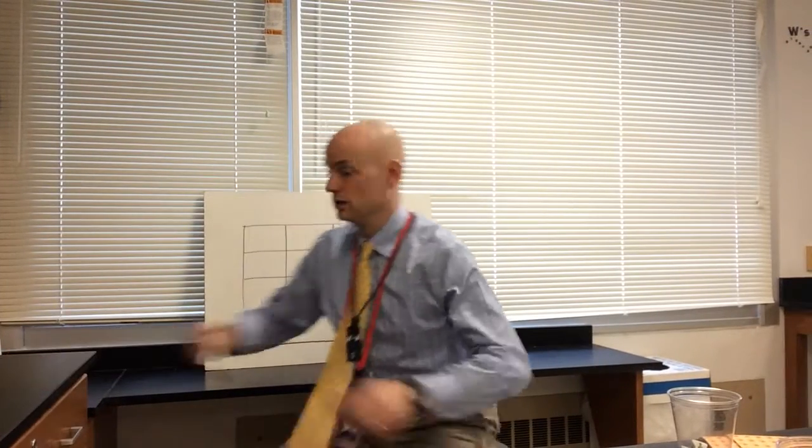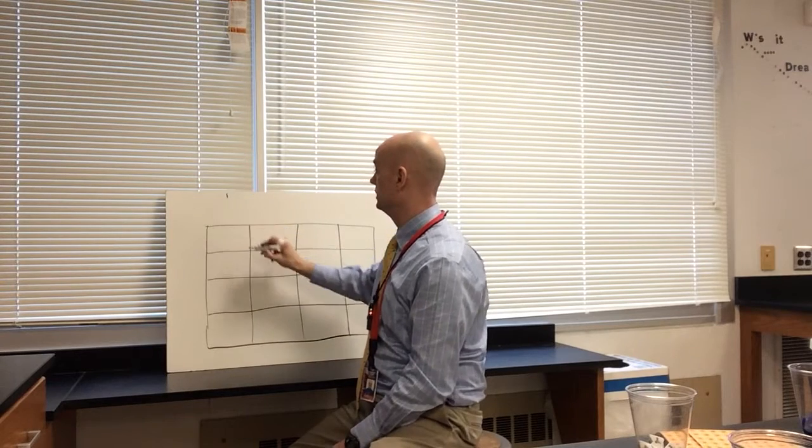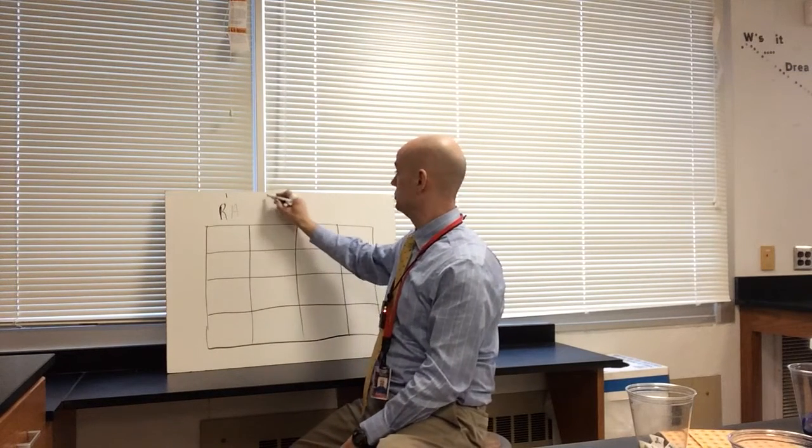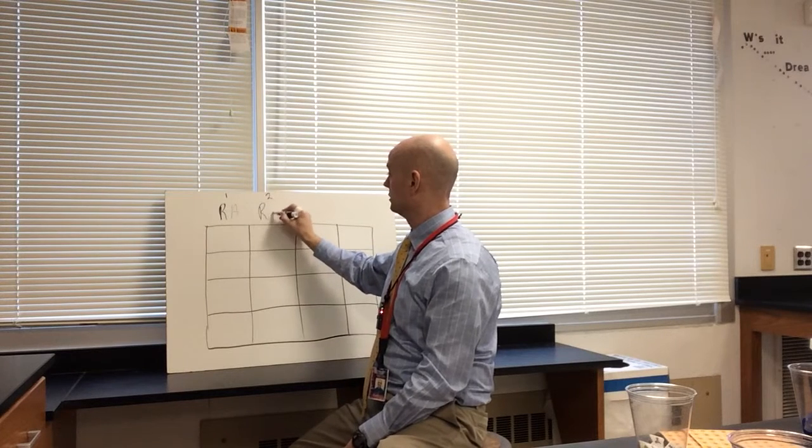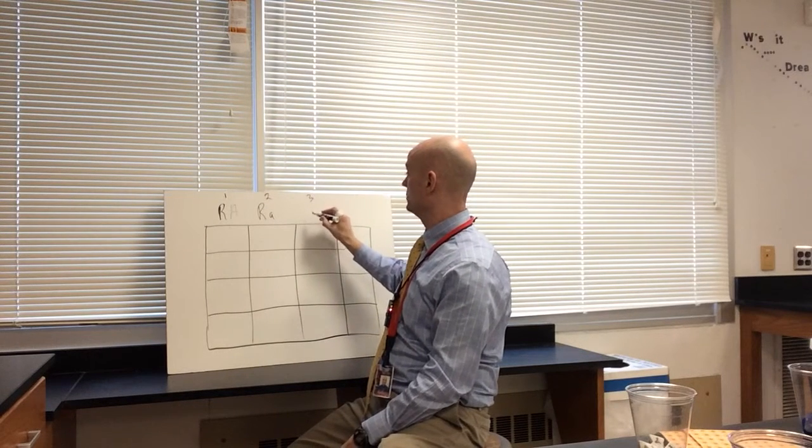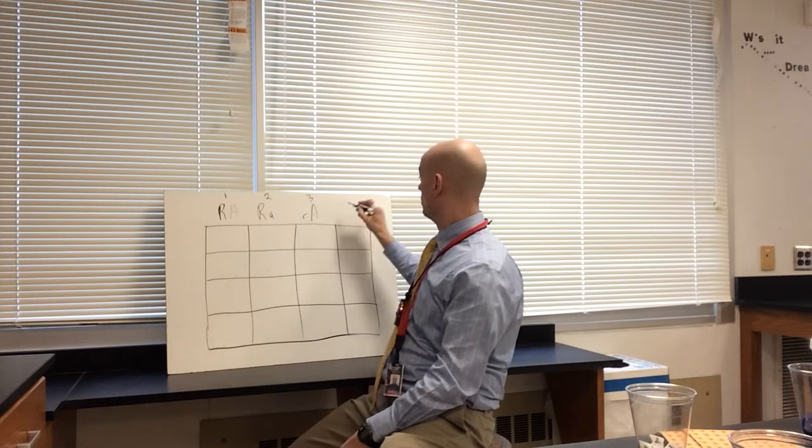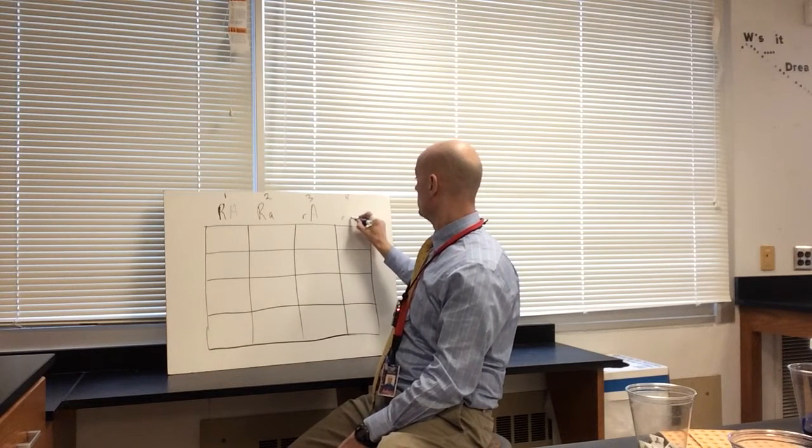So if we were to do a Punnett square, it'd look like this. So here is our square. If you get a one, you're going to get big R, big A. If you get a two, you're going to get big R, little a. A three is going to be little R, big A. And a four is little R and little a.